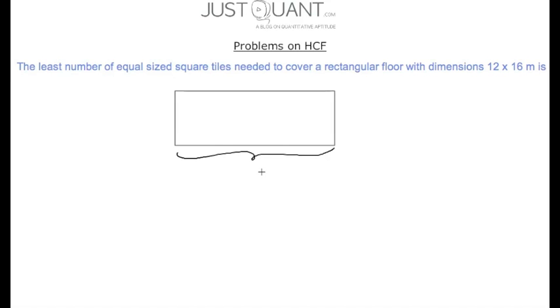Let's solve our first problem: What is the least number of equal sized square tiles needed to cover a rectangular floor with dimensions 12 by 16 meters? The rectangular floor can be covered with equal size square tiles when the side of the square exactly divides the length and breadth of the rectangle.